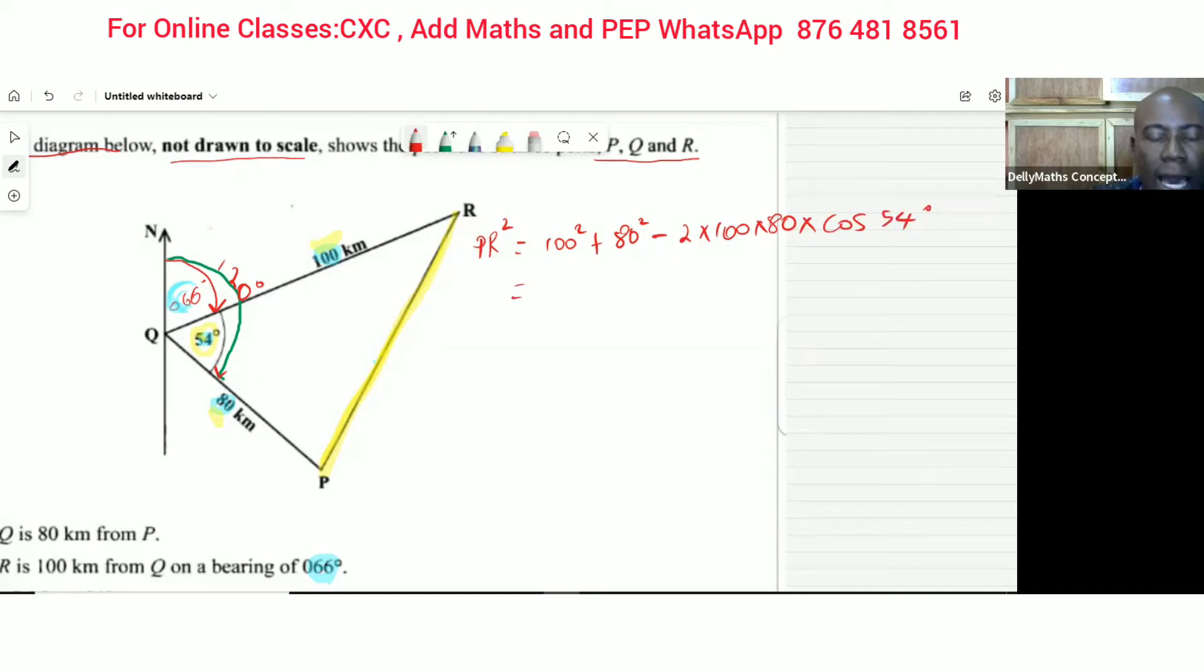Now let us just put these out. 100 squared will give us 10,000, 80 squared will give us 6,400. For this part I normally advise people to put all of this on the calculator one time. So we're talking about minus 2 times 100 times 80 times the cosine of 54. Please make sure that your calculator is in degree mode. That's going to give us minus 9,404.56. Let's finalize this: 10,000 plus 6,400 and then we're going to take away 9,404.56. So we're left with 6,995.44.